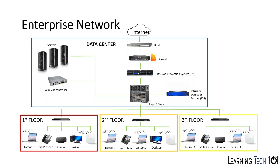When you start getting into enterprise, you're going to encounter a lot more devices and concepts that you may never see in a small office or home network. Hopefully this helps you understand the difference between a SOHO network and an enterprise network. When learning about different devices, keep in mind that a home router is doing the job of multiple devices combined into one, which is different from how those devices work in an enterprise context. Hope you found this helpful and I appreciate you watching.